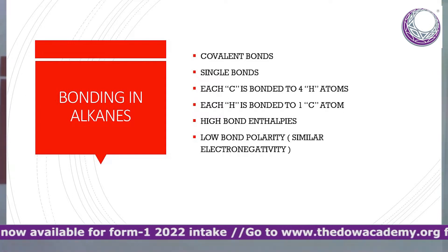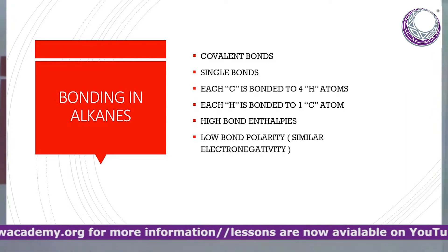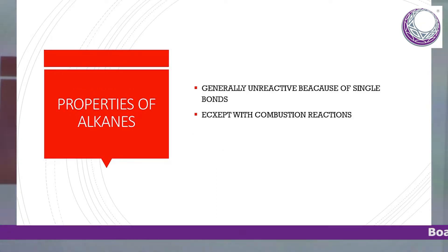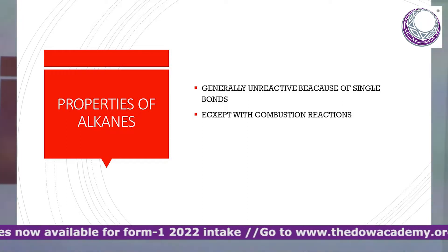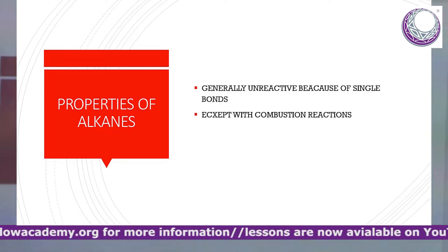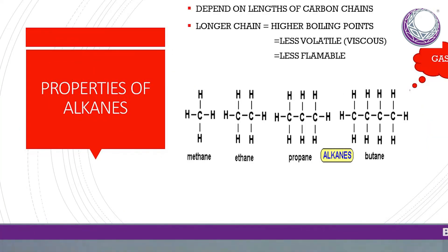Each hydrogen is bonded to one carbon atom. Alkanes have high bond enthalpies — the energy needed to break the C-H bond is high — and low bond polarity. They are generally unreactive because of the single bonds, which means they are saturated. They can undergo certain reactions: they undergo combustion, and when exposed to UV light, they undergo substitution reactions.